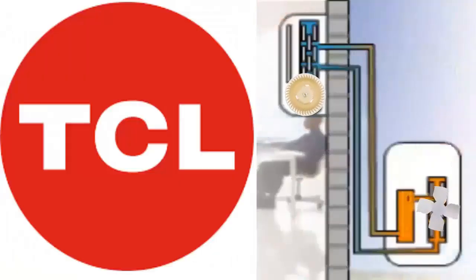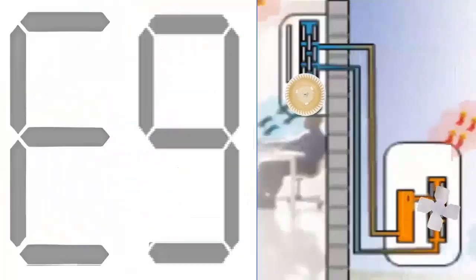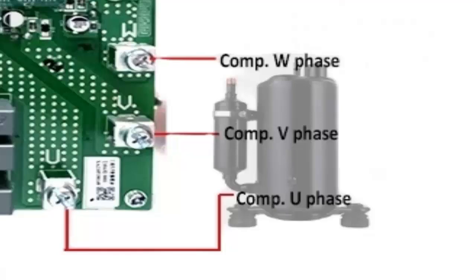Step 3: If the E9 error persists and occurs when the compressor starts or doesn't start at all, verify that the connection from the external electronic board to the compressor is correct.